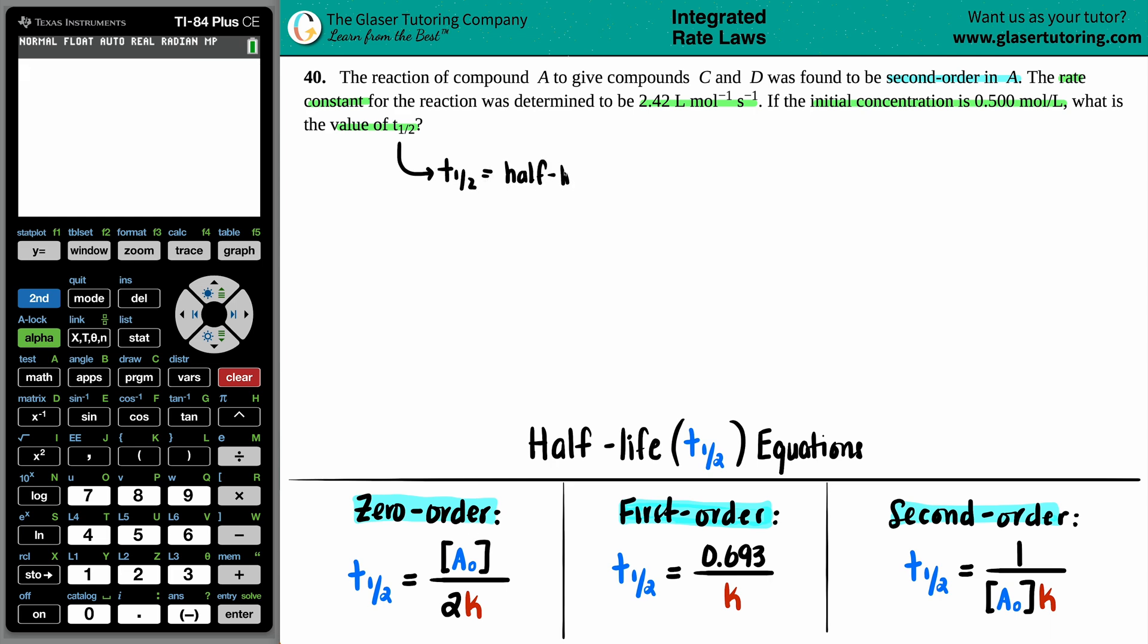A half-life is the specific amount of time it takes for your concentration to drop to 50%. So if we're initially starting at 0.5 and the 50% drop, if we just divide that by two, it would be 0.250, right? Moles per liter. The time that it would take to go from 0.5 to 0.25 is exactly your half-life because you're exactly going to 50% of what you started with.